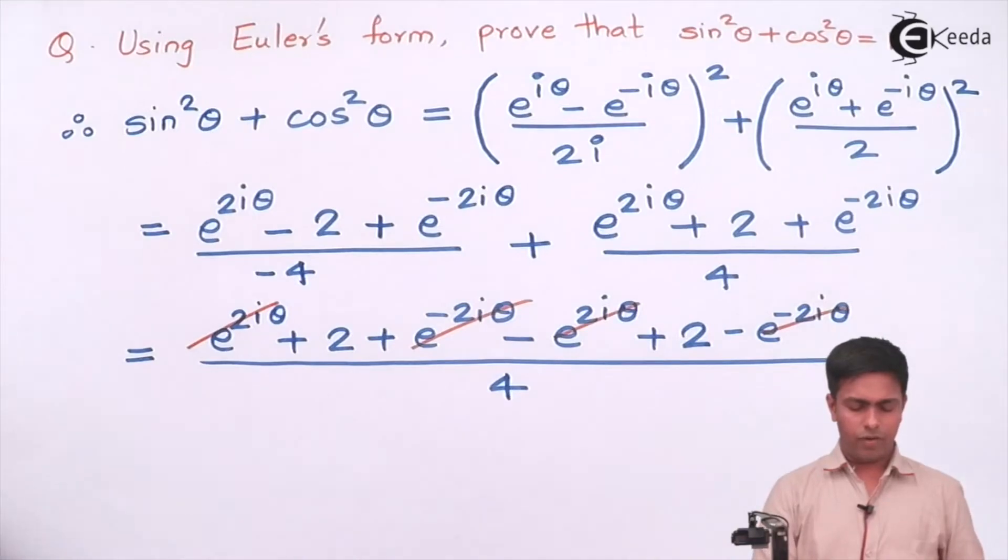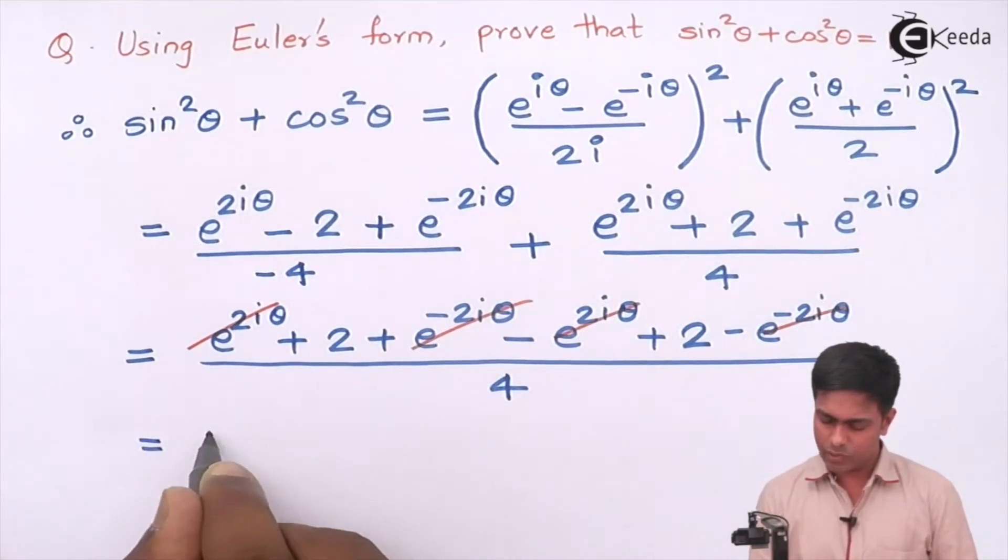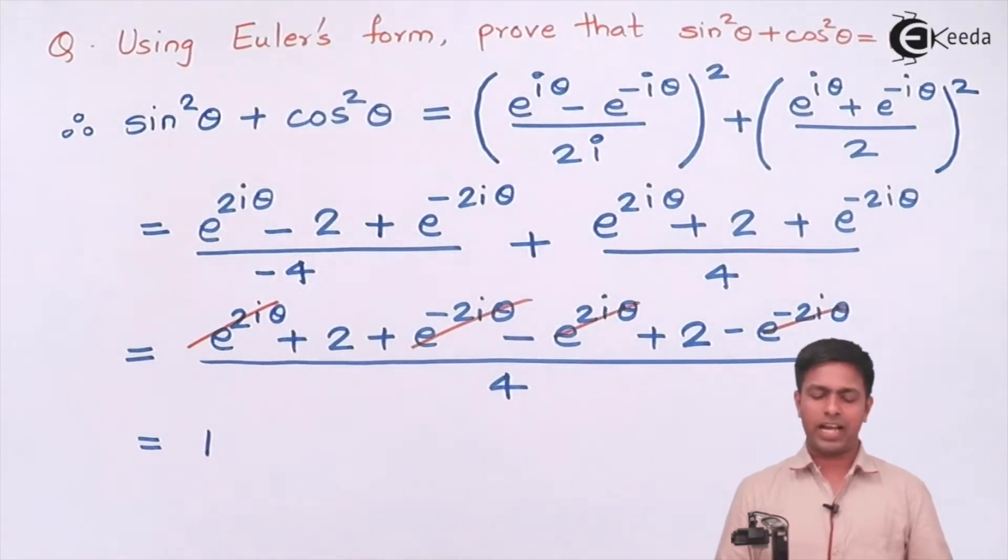Now we can cancel the same and opposite sign terms, so this is cancel, this is cancel, and we will get 4 in the numerator. So 4 upon 4 is equal to 1, and here we have proved that sin square theta plus cos square theta equal to 1, which is your most favorite identity.